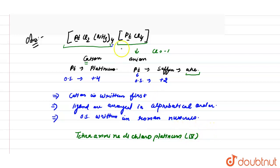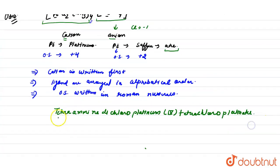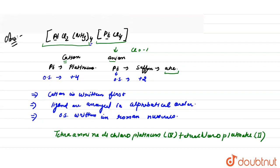The oxidation state for the first complex (cation) is +4. The name of the second complex (anion) is 'tetrachloro' followed by 'platinate', using the suffix '-ate' since it is an anion, with oxidation state +2. This gives the complete IUPAC name of the coordination compound.